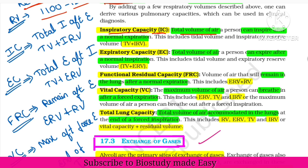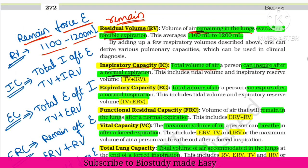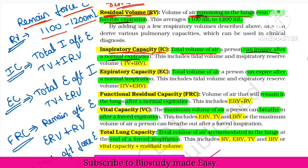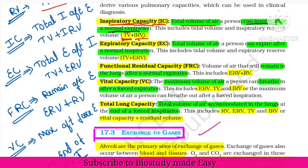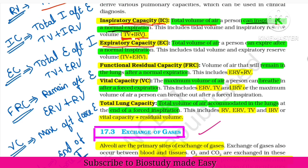After normal expiration, how much air can you take in — that is inspiratory capacity (IC). It is calculated as TV plus IRV — tidal volume plus inspiratory reserve volume.